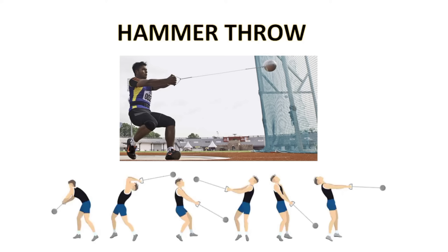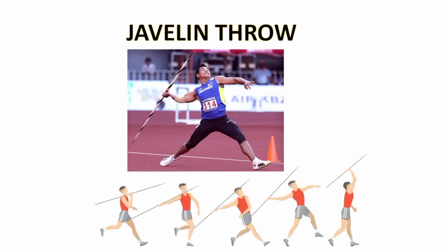The hammer throw is a throwing event where the object thrown is a heavy steel ball attached with a long wire to a handle. The facility for the hammer throw includes a throwing circle, a protective cage, and a landing sector, and it is usually combined with the facility for the discus throw.